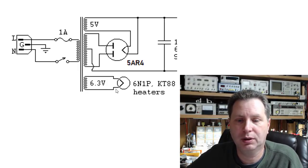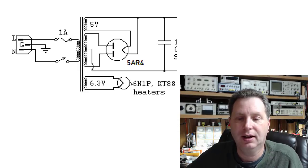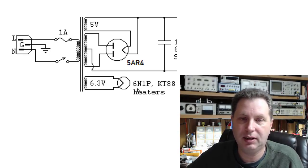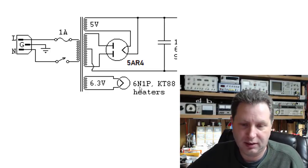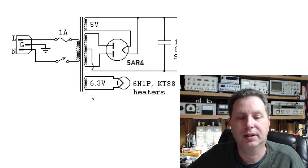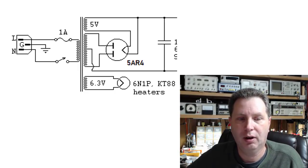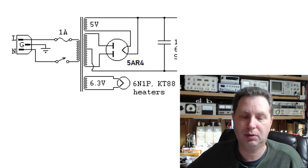The filaments of the tubes. So you'll end up daisy-chaining or putting in parallel the filaments of multiple tubes. And here it's telling you this would feed the 6N1Ps, the KT88s, 6SN7s, 12AX7s, whatever. But you're just feeding them with an AC voltage directly to the filaments, and then you'd daisy chain those over and over. That's typically what you would see.